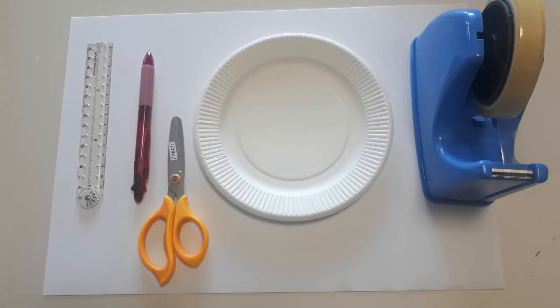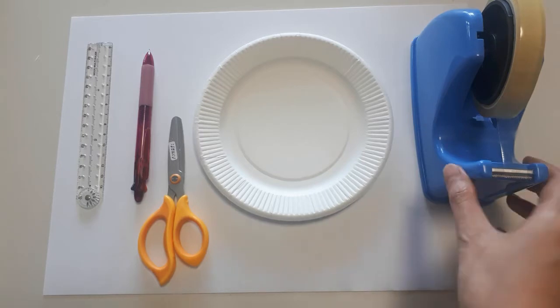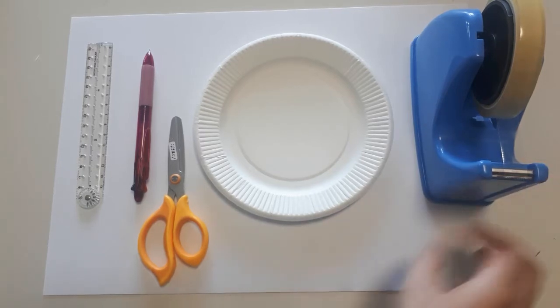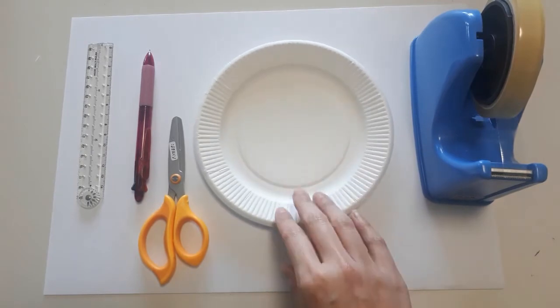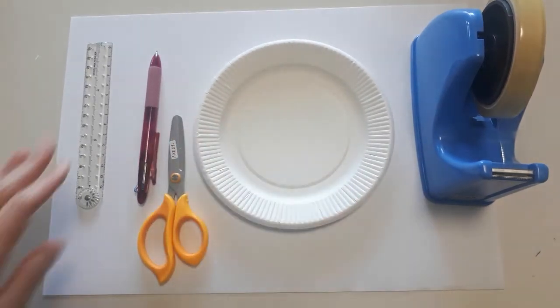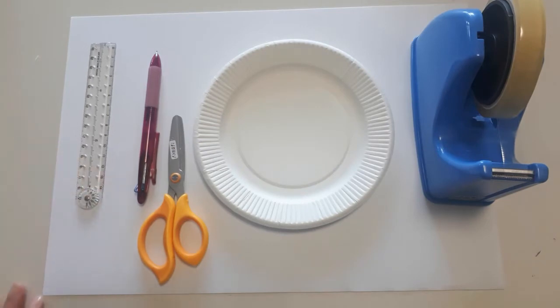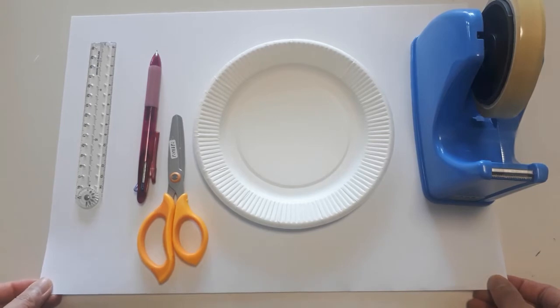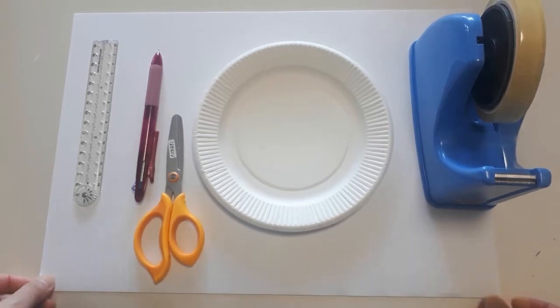Hi, today we're going to make a rabbit hat out of paper plate. So what we need is tape, clear tape, paper plate, a pompom, pencil, ruler, and a piece of white paper. Let's see how we're going to make it.